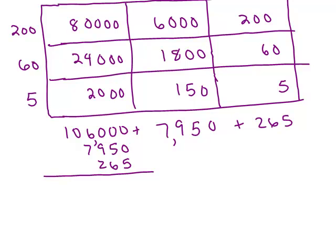And you can add from left to right or right to left. So go ahead and do that addition on your own. And I'm going to do it using a left to right method. That's a 1 and a 0. And then 6 and 7 is 13. So I'm going to write that 13 here. 9 and 2 is 11. 5 and 6 is 11. And that's a 5. So we've got 1, 1, 4, 2, 1, 5.